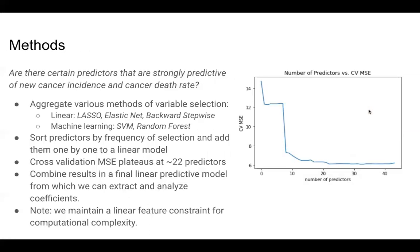The first question we wanted to address was finding a set of most significant predictors for cancer rate. To approach this, we aggregated various methods of feature selection, including linear methods like lasso, elastic net, and backward stepwise models, as well as machine learning methods such as support vector machines and random forest models. Each method produced a set of most important predictors, and we counted up the frequency that each predictor was found to be important across all methods. We sorted them by most to least frequent and added them one by one to a linear model, using cross-validation at each step to calculate an average mean squared error score.